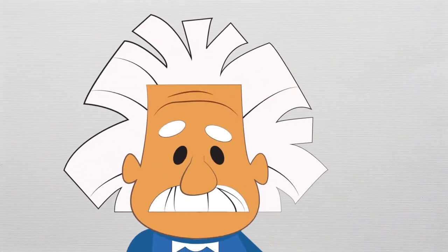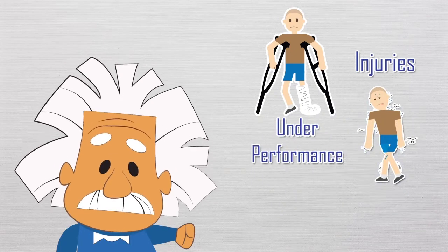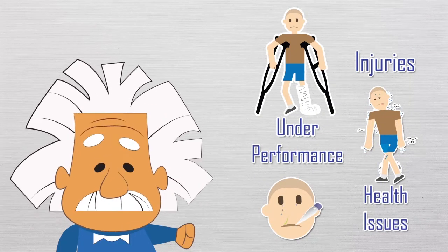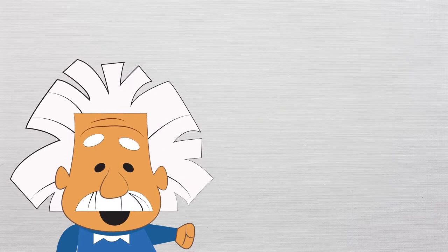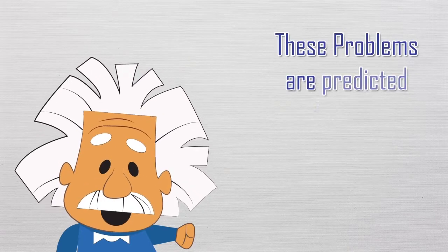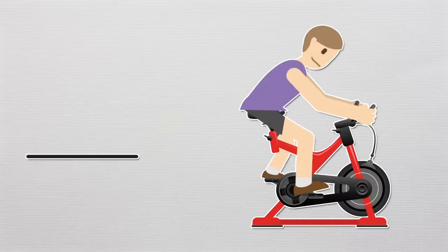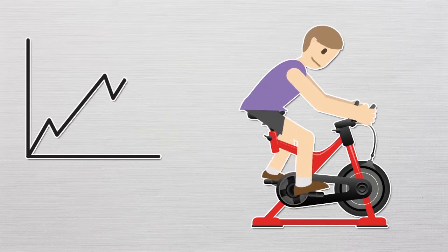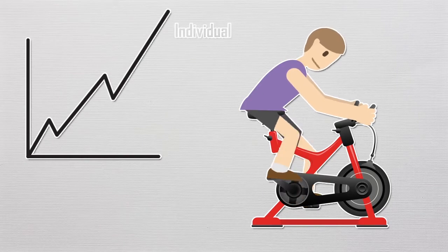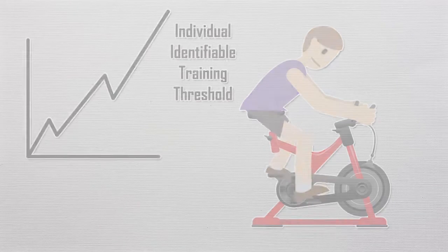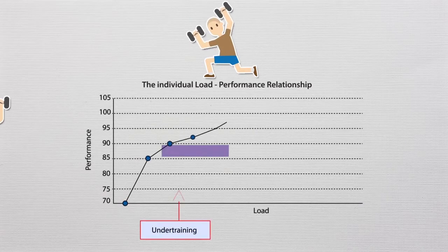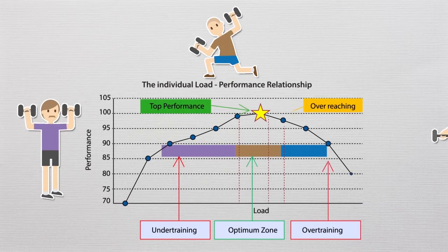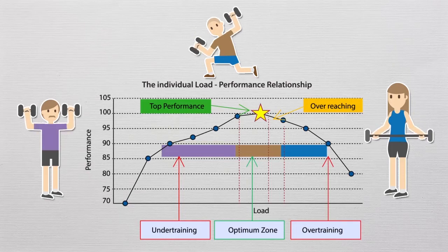Research shows that most injuries, underperformance, and health issues affecting competitive athletes are not just bad luck — they can be predicted and prevented. Health and performance issues arise when athletes exceed individually identifiable training thresholds. The combination of both quantitative and qualitative data is the most promising way to evaluate training load and training load response.